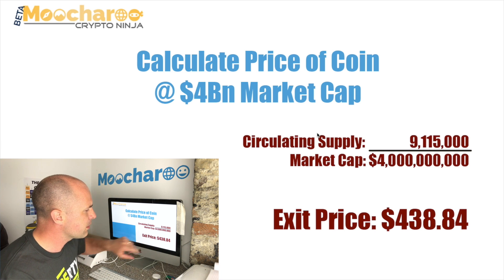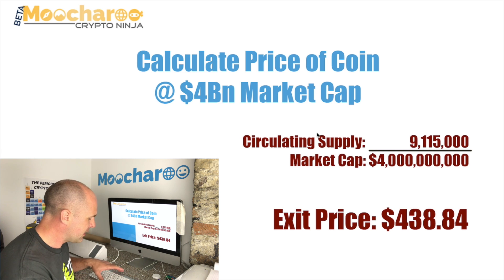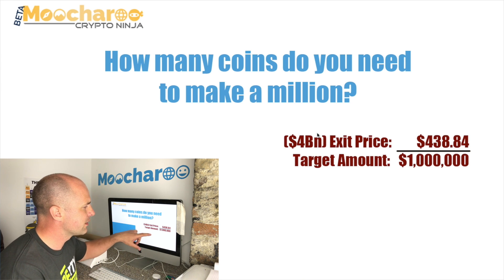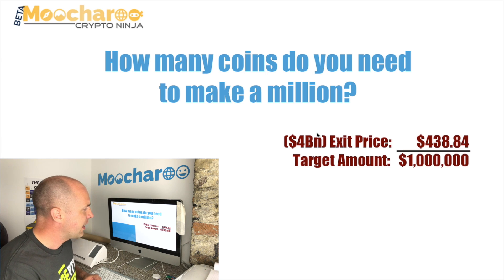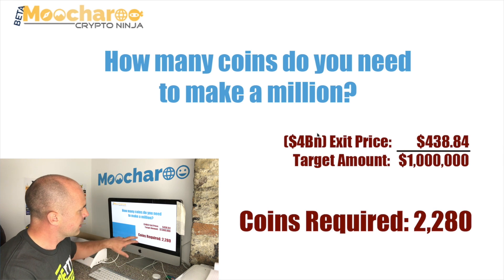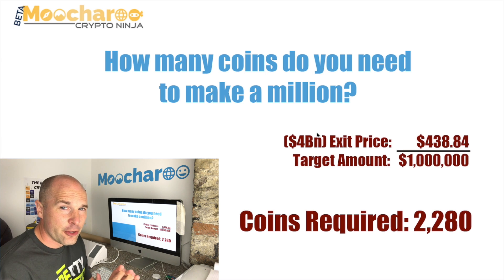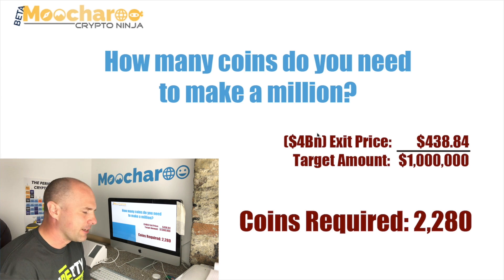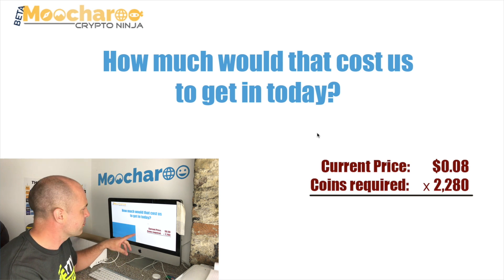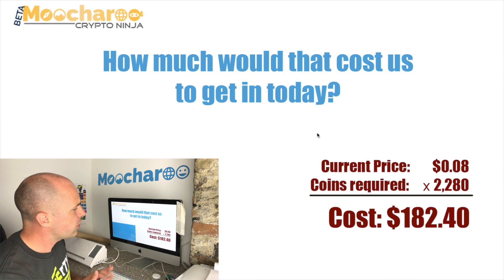Your target exit price - that you want to sell at on an exchange to make a million - is going to be $438.84. This is the price we want to be selling at. But how many coins do we need to buy today to make that happen? You need to take a million dollars and divide that by your exit price of $438, which gives you 2,280 - that's the coins required. If you bought 2,280 coins today, you'll be able to sell those at four billion and make a million.